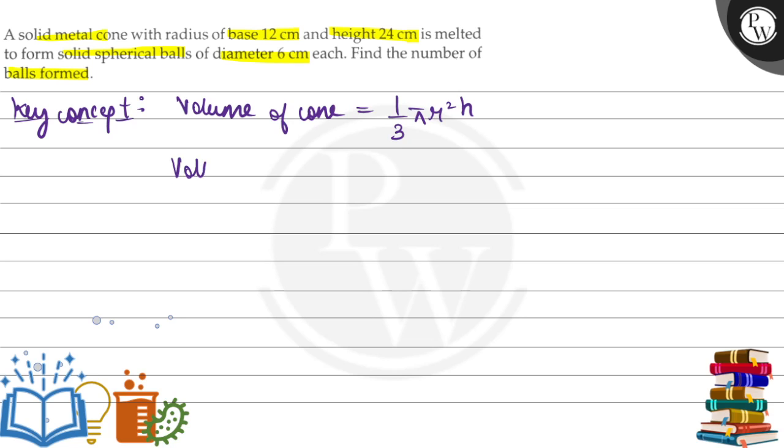Similarly, volume of sphere is given by 4/3 πr³. R is the radius of sphere.